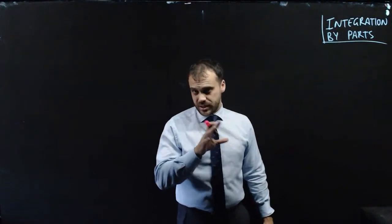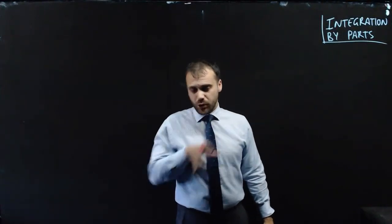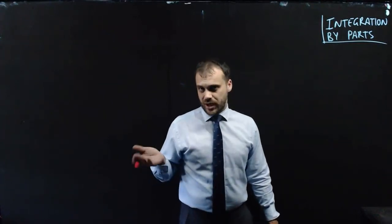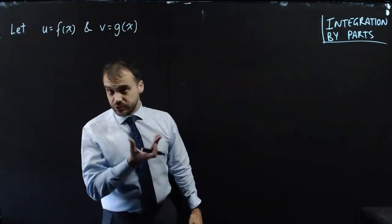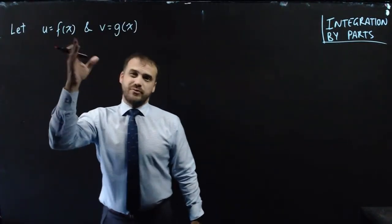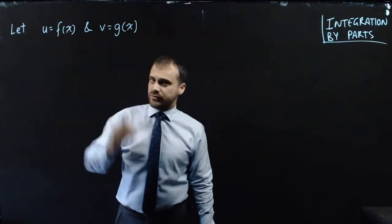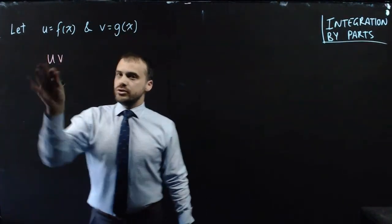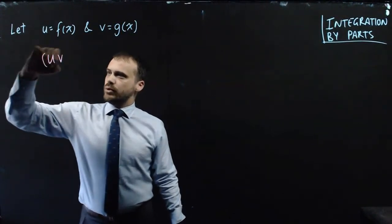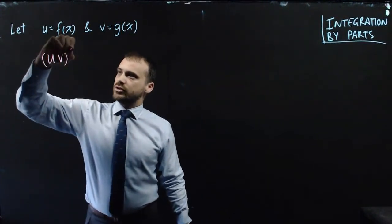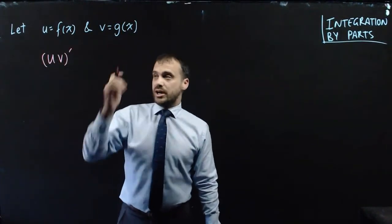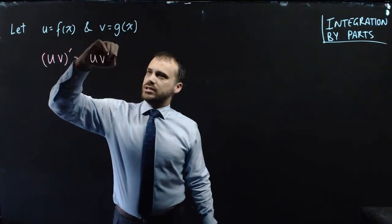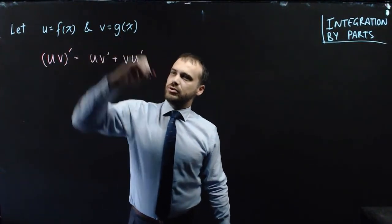We're doing integration by parts. If you've seen the product rule before, the integration by parts formula comes directly from that. The product rule, as a reminder: if u equals some function f(x) and v equals some other function g(x), we can say that to find the derivative of u times v — that is, (uv)' — we get uv' plus vu'.